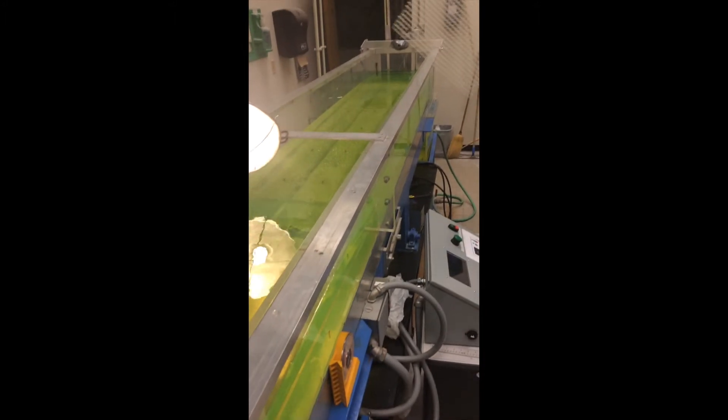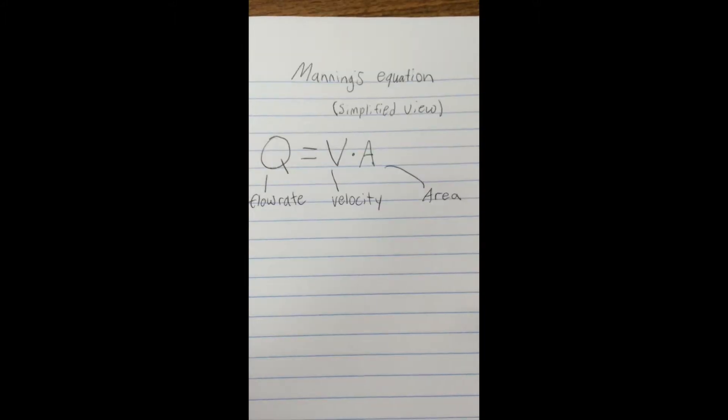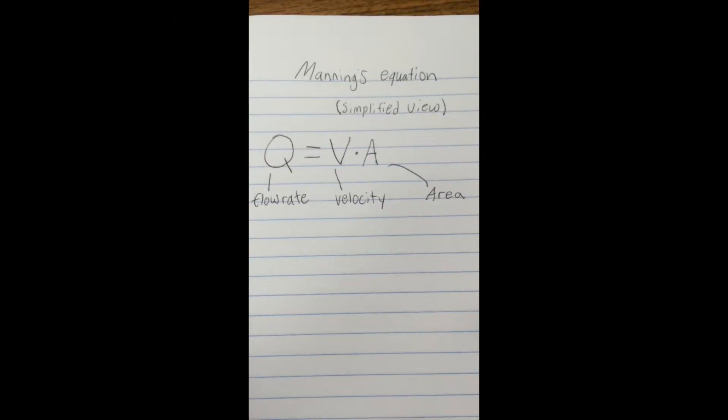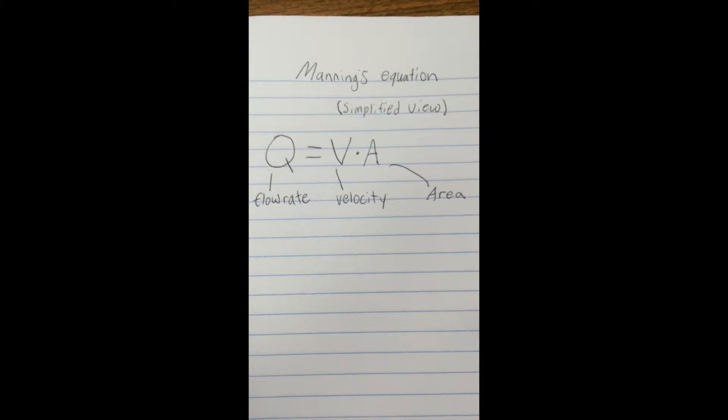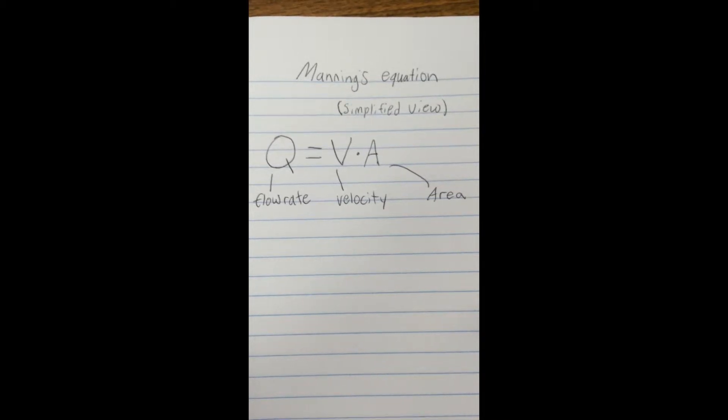To start, it's helpful to understand what Manning's equation actually is. Our book, Elements of Physical Hydrology, defines it as an equation commonly used to calculate channel mean velocity based on channel geometry and roughness. In other words, Manning's equation helps find the flow rate in a channel based on how big the channel is, as well as what the channel is made out of.